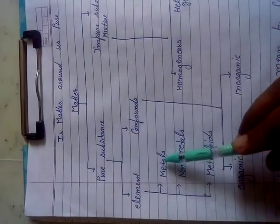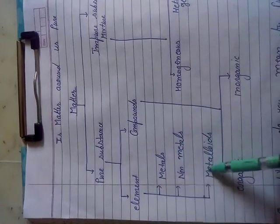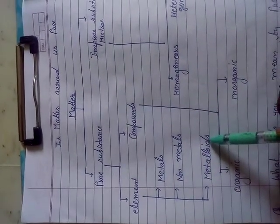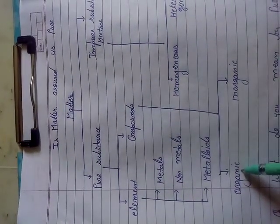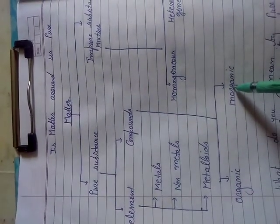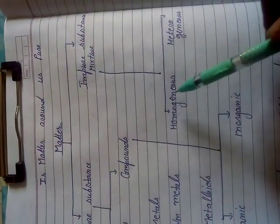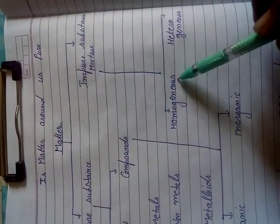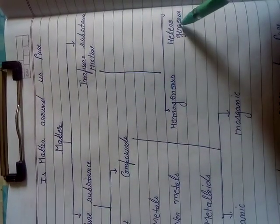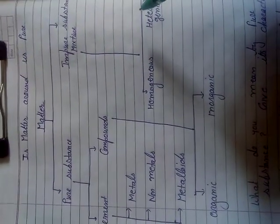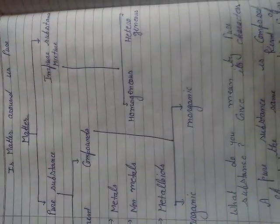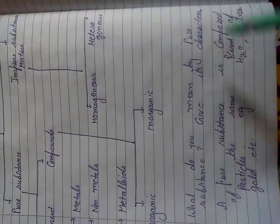Elements are further divided into metal, non-metal, and metalloid — that is three parts. Compounds are divided into two parts: organic compounds and inorganic compounds. Impure substances are called mixtures, and mixtures are of two types: homogeneous mixture and heterogeneous mixture. This is the chemical classification of matter.